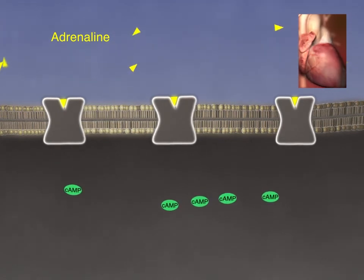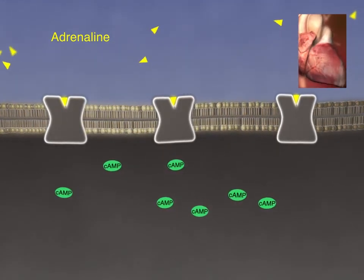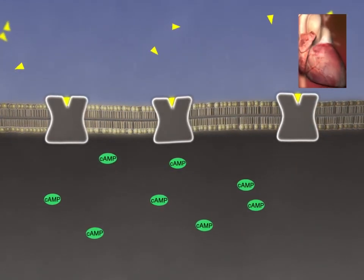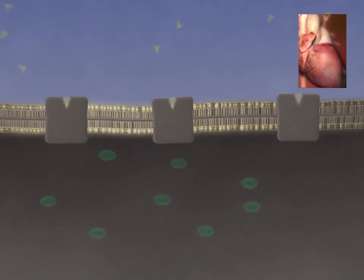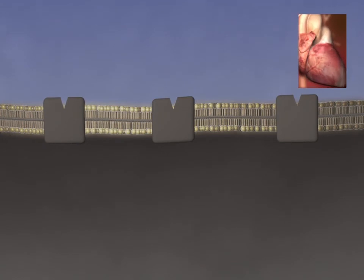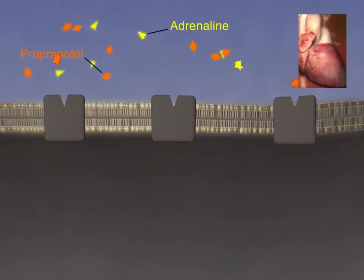For example, there are a number of drugs that are antagonists for beta-adrenergic receptors and these are commonly prescribed for regulation of hypertension and other cardiac conditions. These drugs are commonly called beta-blockers and propranolol is an example of this type of drug.